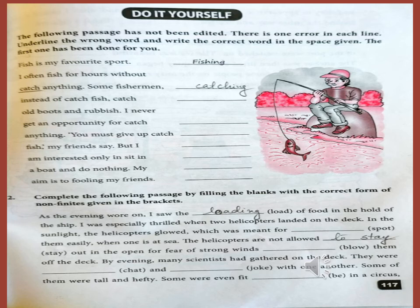The following passage has not been edited. There is one error in each line. Underline the wrong word and write the correct word in the space given. Already two are done for you. Complete the following passage by filling the blanks with the correct form of non-finites given in brackets. Already some are done for you.